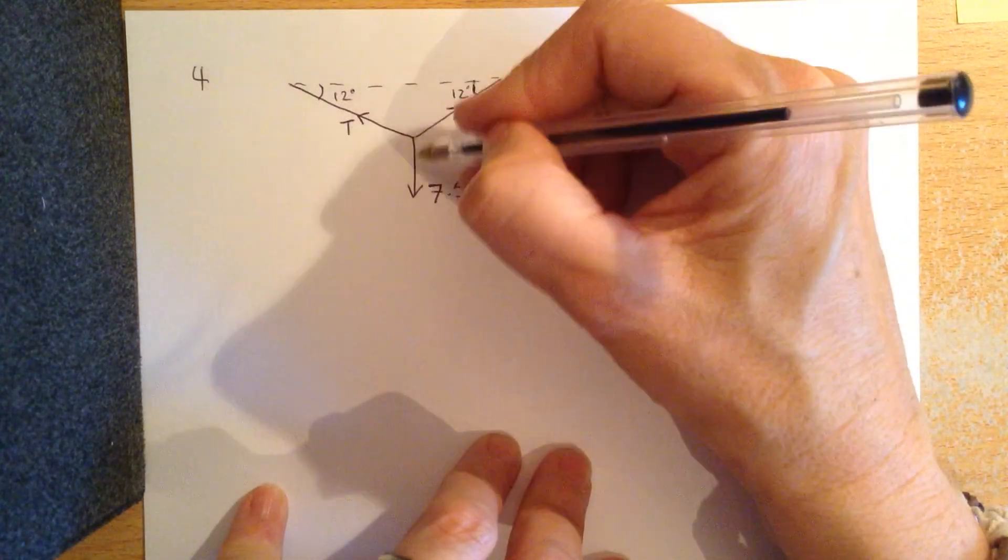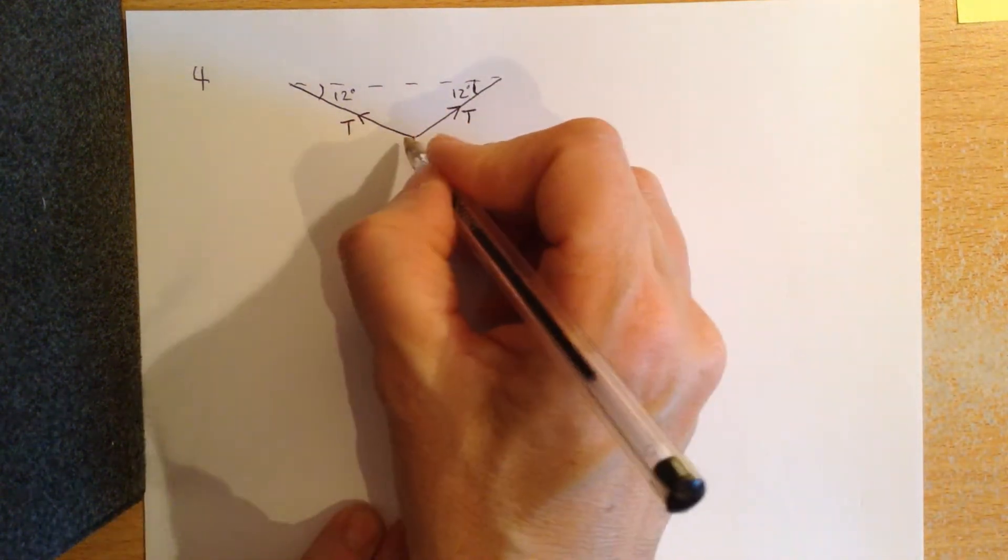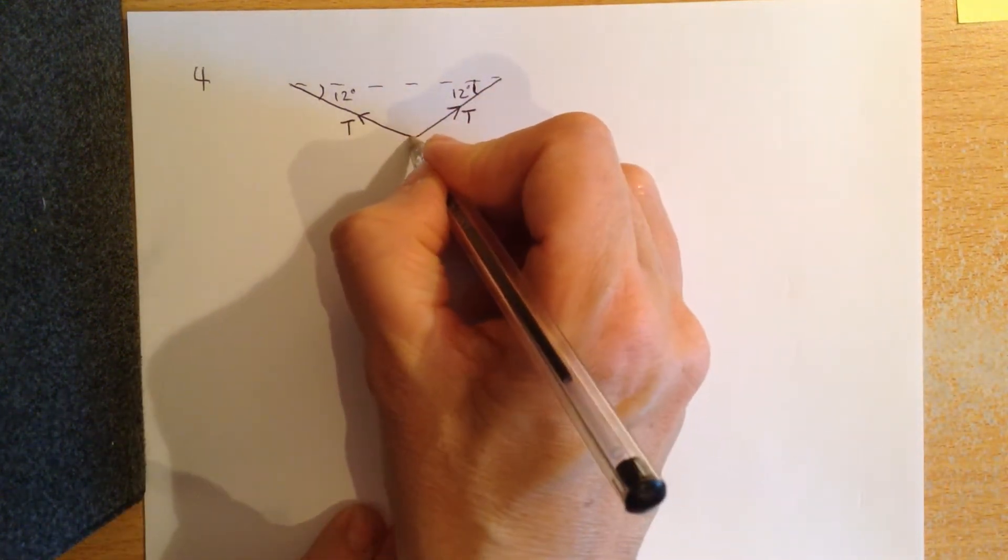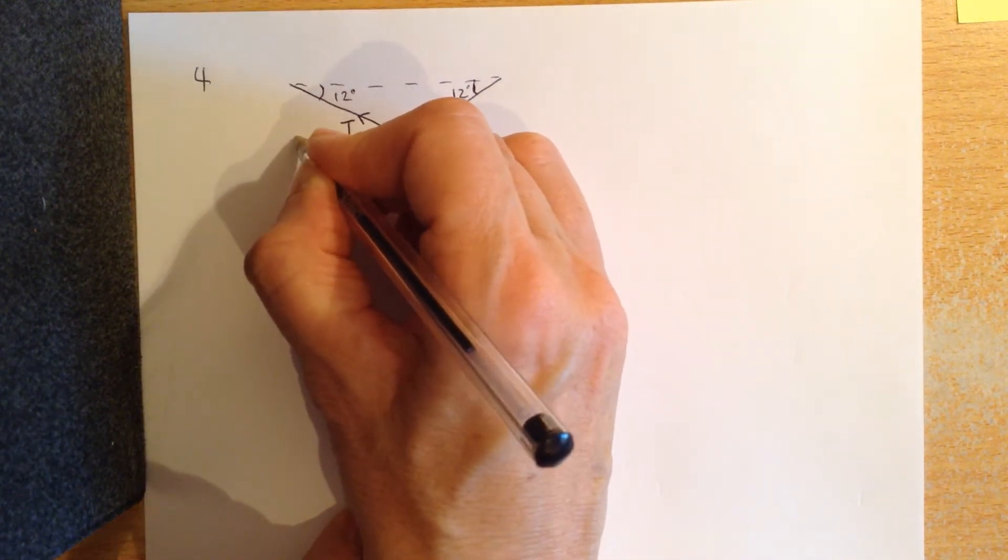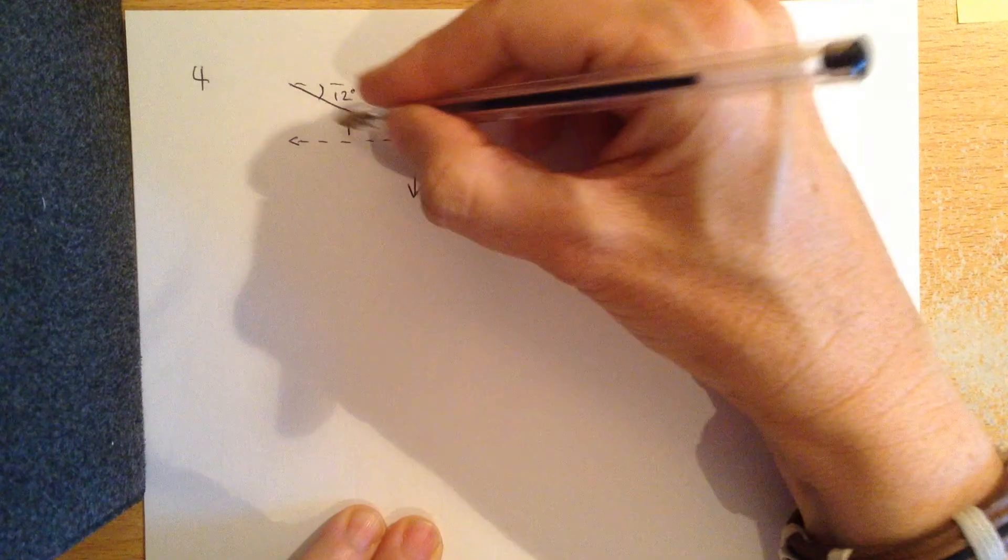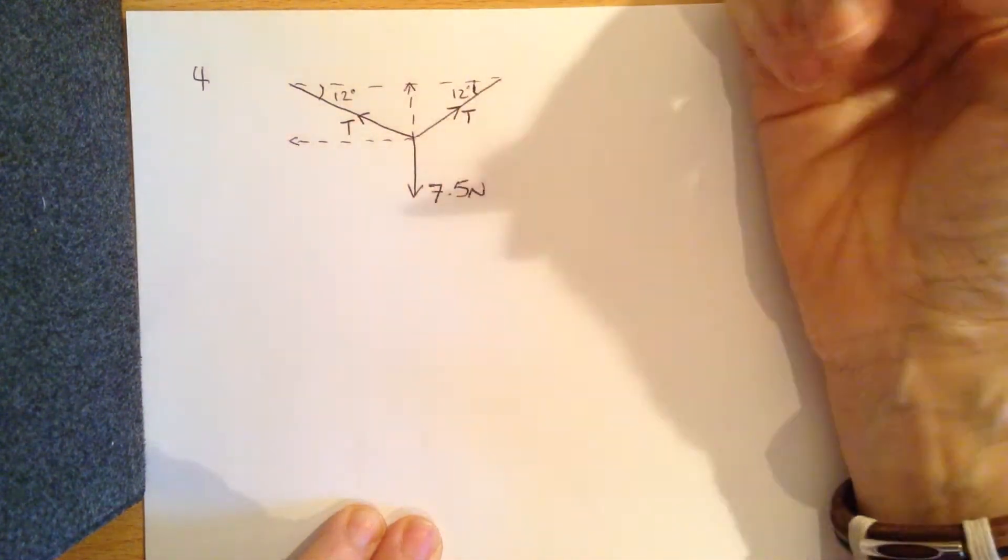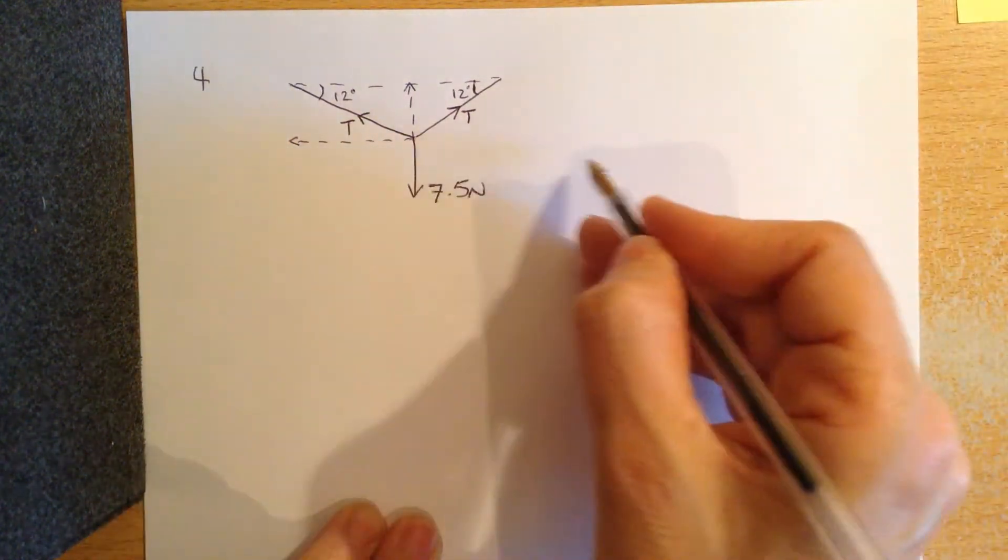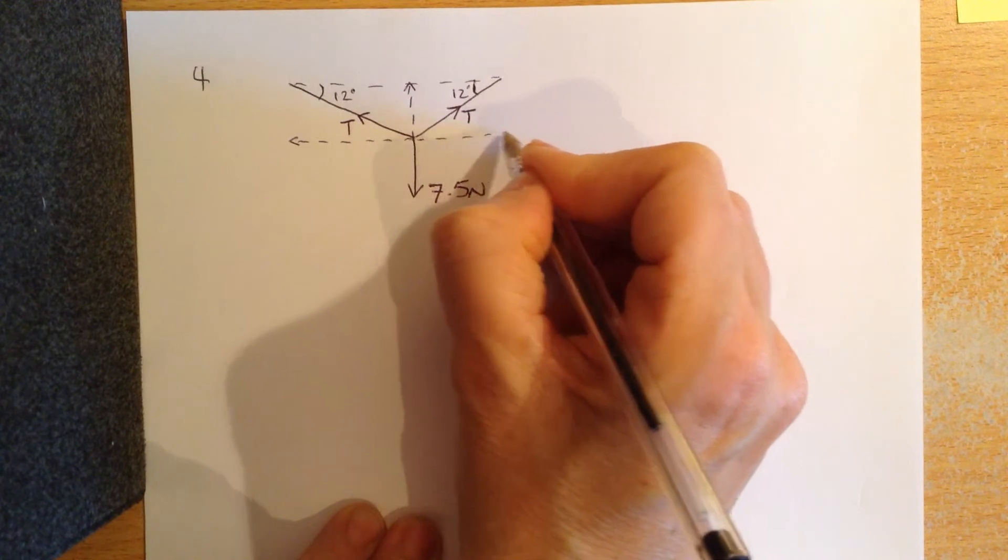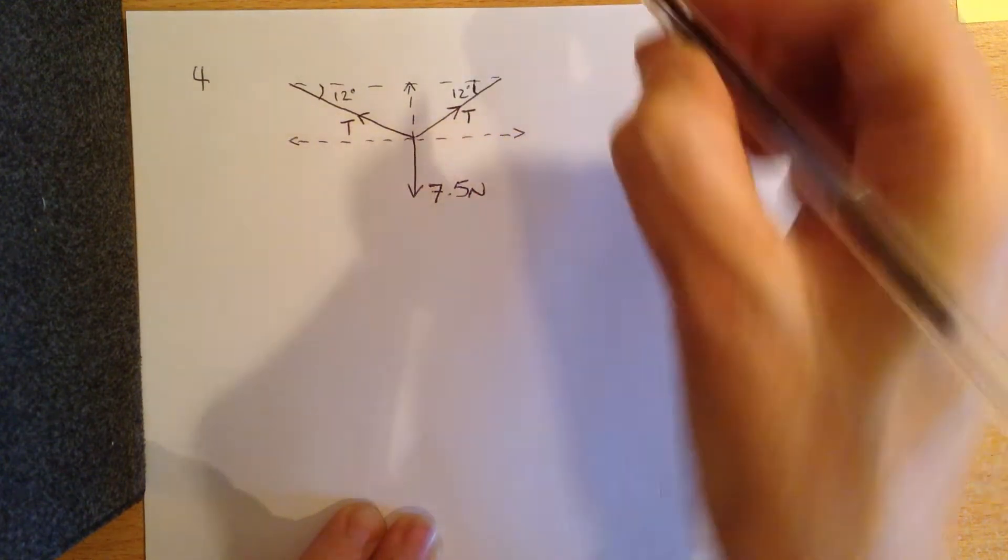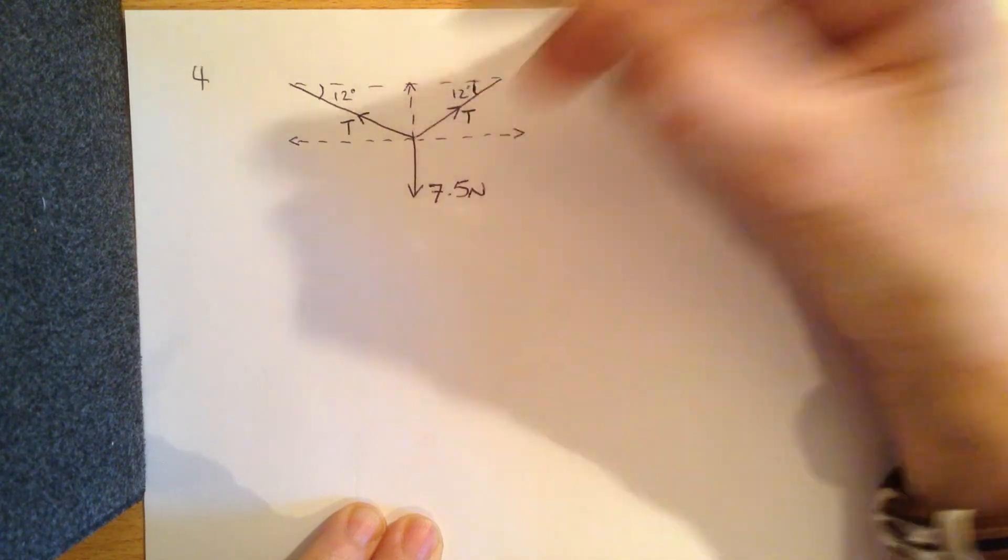Well, each of these tensions are made up of two components. Their horizontal component, if I just look at the left-hand side at the moment, this tension here, and the vertical component will be the same for this side. As I say, not a great diagram.